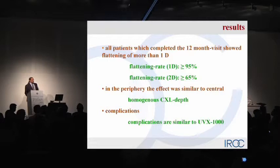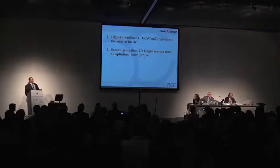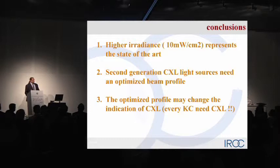Complications observed are what you know from standard cross-linking procedures. In conclusion, we believe second-generation cross-linking devices need a better understanding of the conditions of a keratoconic eye and need to adjust the light profile. We can do things faster, but we are focusing on effectiveness. What we found is that 10 milliwatt per centimeter squared is extremely effective compared to other experiments. Based on the data we have seen so far, and getting more data from Pia Cummings and from Dresden, we believe cross-linking now needs to be done in every keratoconus patient. Thank you very much.